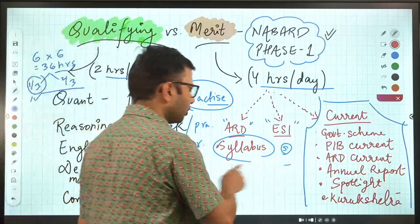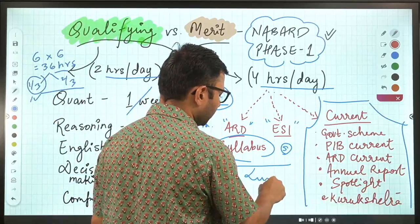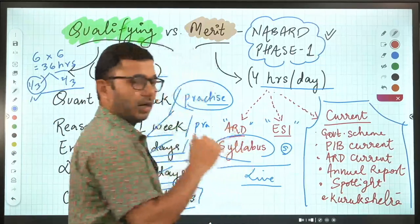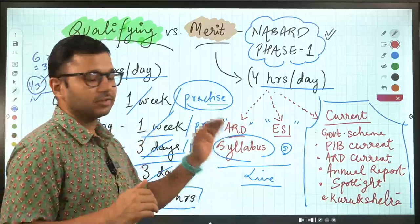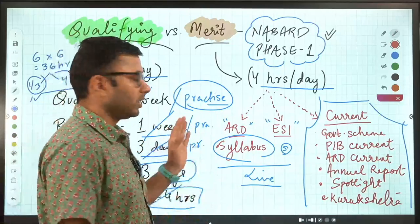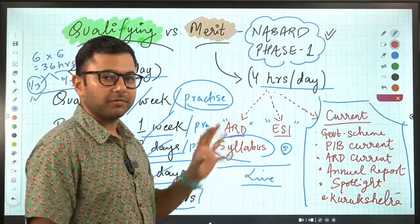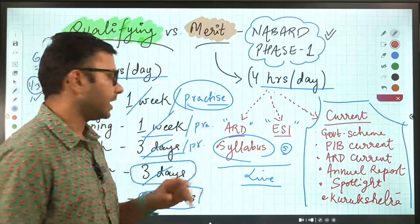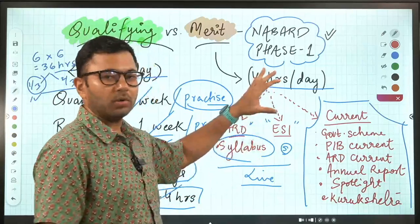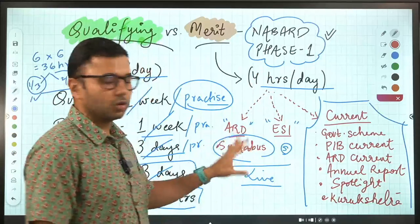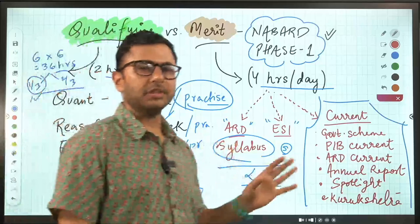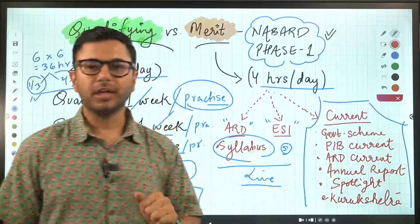For all the enrolled students, I'm already taking live classes. ARD, Tuesday, Thursday, Saturday. ESI Monday, Wednesday, Friday. That means Monday to Saturday, you have live classes in the evening every day. So you're spending about two hours every day on these live classes. Through these, you can easily cover the entire syllabus of ARD and ESI.